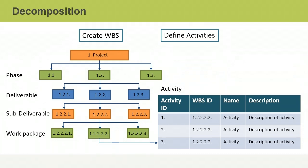In this example, we select one of the work packages from the WBS and decompose it into three activities that will need to be performed in order to complete the work. Activity IDs are assigned as a helpful way to track and control the activities and to provide better control of the project as a whole.